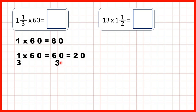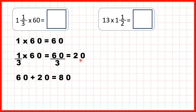60 divided by 3 is 20. You might need to use short division here, or you might be able to do it mentally: 6 divided by 3 is 2, 0 divided by 3 is 0. So we've worked out 1 times 60 and 1 third times 60, and we just add up our answers. 60 plus 20 is 80. Notice that sometimes when you multiply a mixed number by a whole number, you still get a whole number as your answer — that's because 60 divided by 3 was exactly 20 with no remainder.